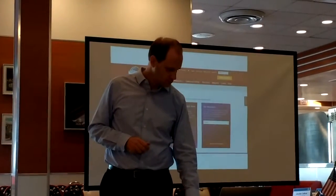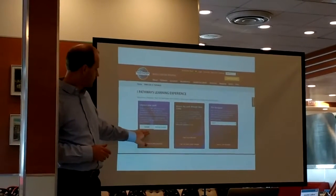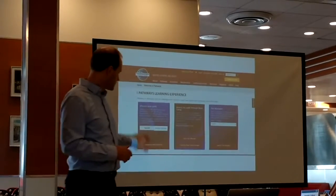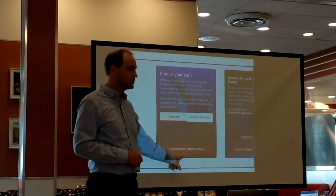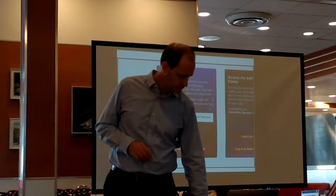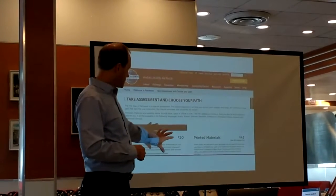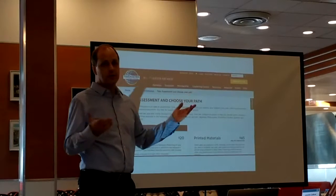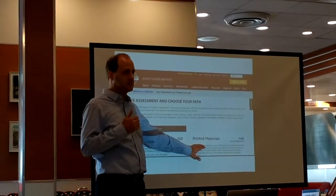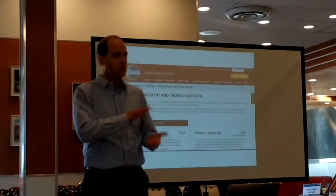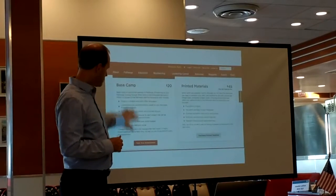Once you do that, you'll get onto the Basecamp page. It's already highlighted where you're going to choose a path, and it says 'Continue to the path selection' — that's the button you push. Once you push that, you get to this page. Your Basecamp path is twenty dollars, but your first two paths are free. Here's also your opportunity to order printed materials for the pathway if you'd like, similar to our CC manual.